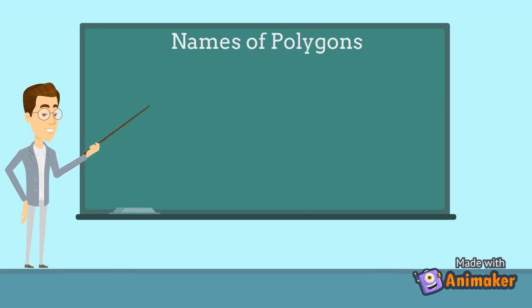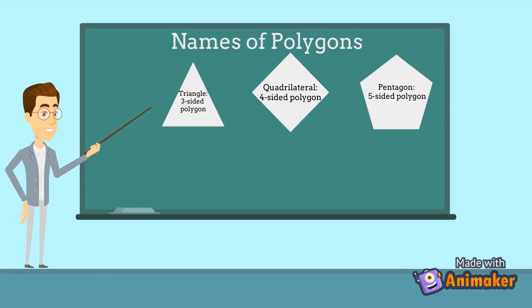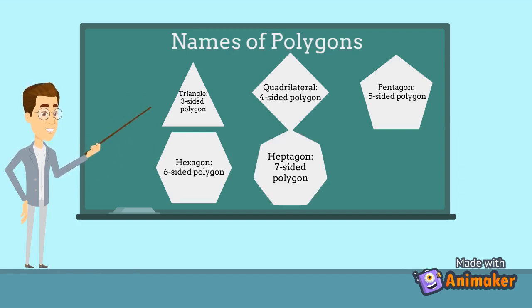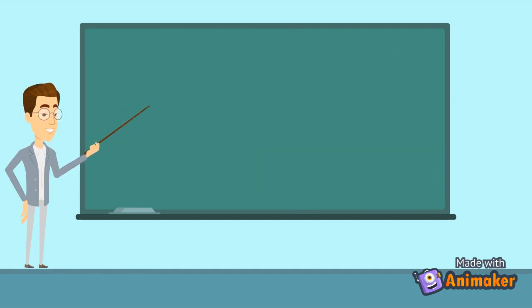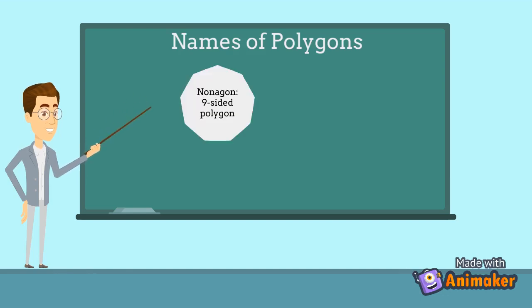There are some names of polygons to remember. Triangle: a shape containing three sides. Quadrilateral: containing four sides. Pentagon: five-sided shape. Hexagon: six-sided shape. Heptagon: seven-sided polygon. Octagon: eight-sided shape. Nonagon: nine-sided shape. Decagon: a ten-sided shape.